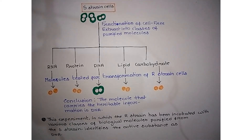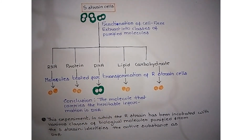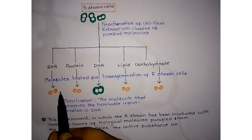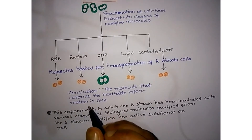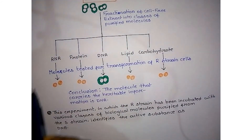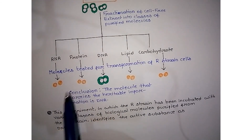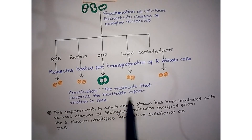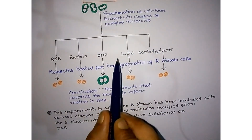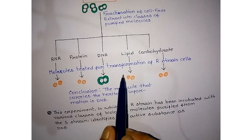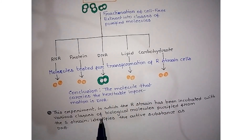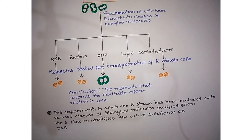When we incubate R-strain with RNA, there is no transformation — R-strain remains R-strain. When we incubate R-strain with protein, we again get R-strain. When we incubate R-strain with lipid and carbohydrate, there is no change either — we still get R-strain. These molecules do not change R-strain cells into S-strain.